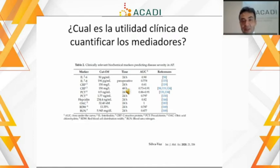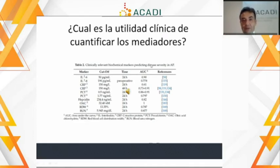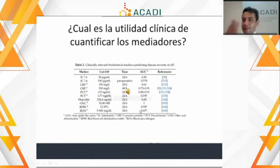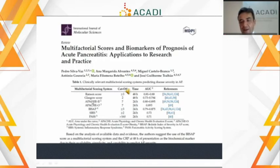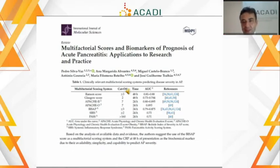En un metanálisis donde se compararon todos los marcadores bioquímicos para predecir la severidad de la pancreatitis en el momento del ingreso, el área bajo la curva en las curvas ROC no supera 0.8, que son pruebas apenas buenas para discriminar el desenlace posterior del paciente. Todavía seguimos dependiendo de los criterios clínicos y no tenemos un marcador serológico confiable para predecir si el curso será leve o severo en las primeras 24 horas. No hay una prueba bioquímica confiable.